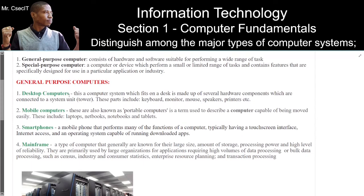General purpose computers. Number one: desktop computers. This is a computer system which fits on a desk and is made up of several hardware components connected to a system unit tower. These parts include keyboard, monitor, mouse, speakers, printers, etc. Number two: mobile computers, also known as portable computers — a term used to describe a computer capable of being moved easily.